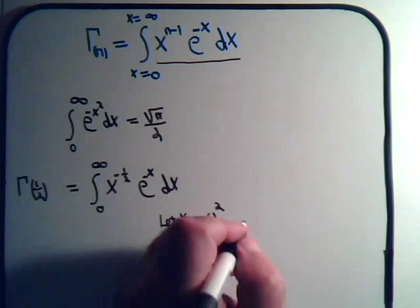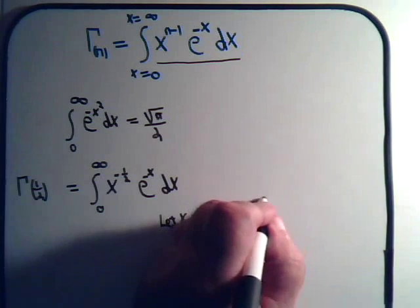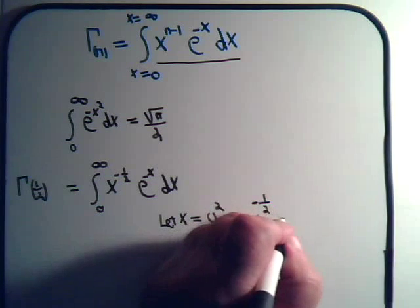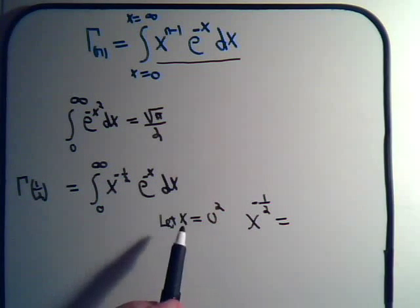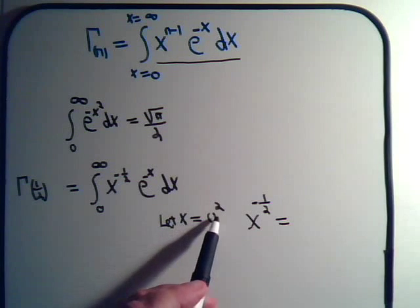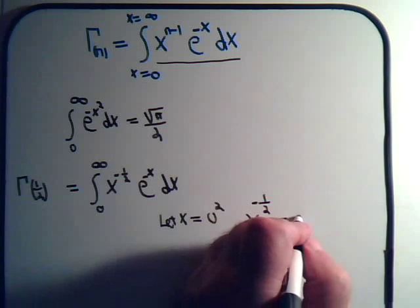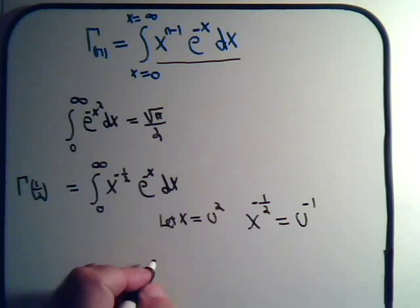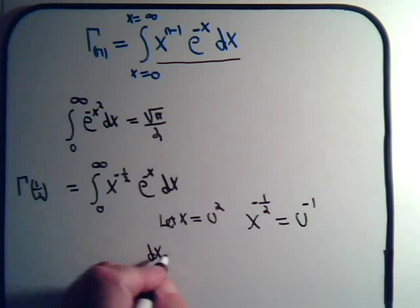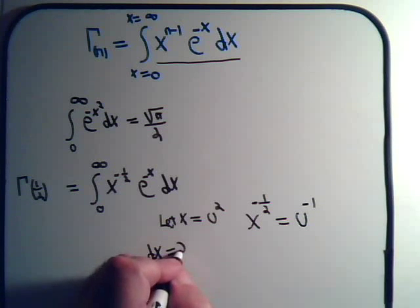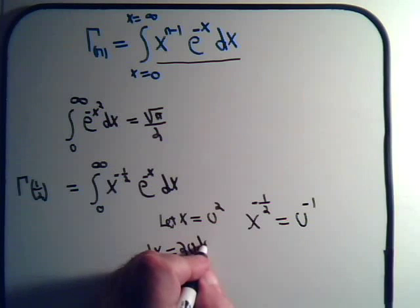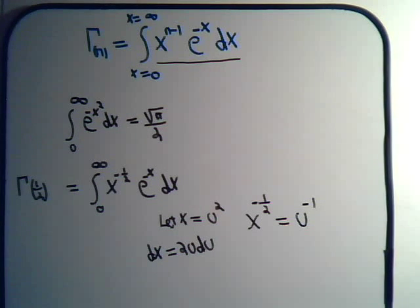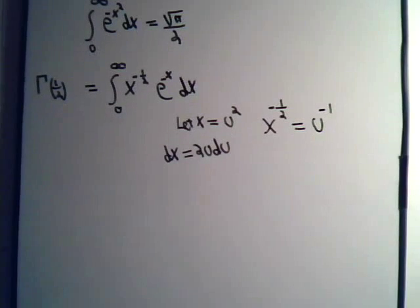If we do that, then x to the minus one half — if I raise this side to the minus one half, then I raise this side to the minus one half — that's u to the minus one. And dx would be equal to 2 times u du.